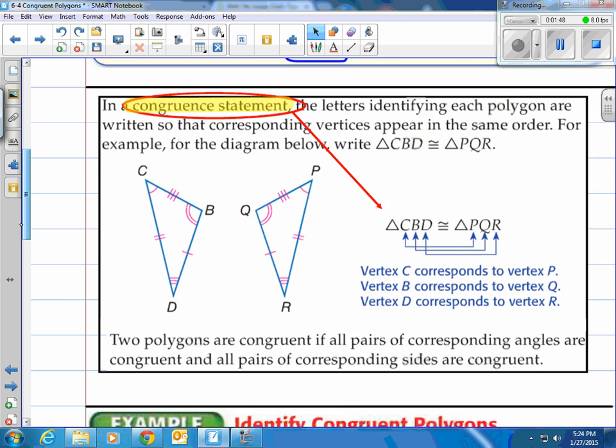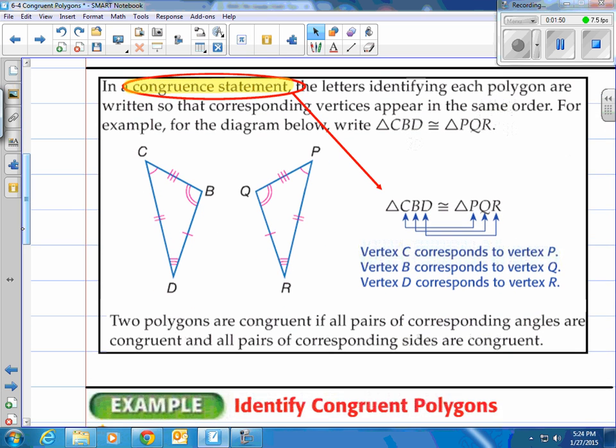Let's talk about writing a congruent statement. In a congruent statement, the letters identifying each polygon are written so that the corresponding vertices appear in the same order. Order matters. For example, for the diagram below, you write triangle CBD is congruent to triangle PQR. Here's why.